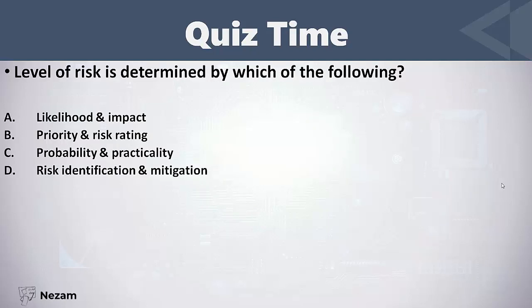Level of risk is determined by which of the following? The options are: likelihood and impact; priority and risk rating; probability and practicality; or identification and mitigation. Risk is considered by two factors: likelihood or probability, and impact or harm.